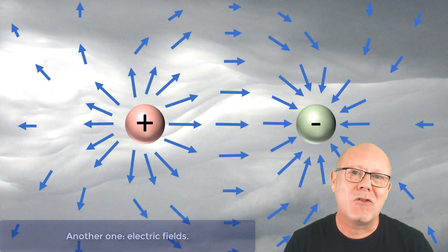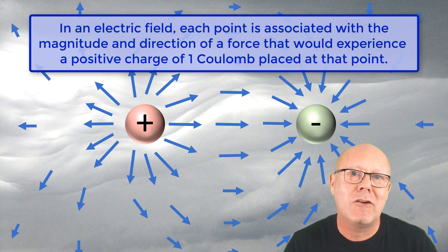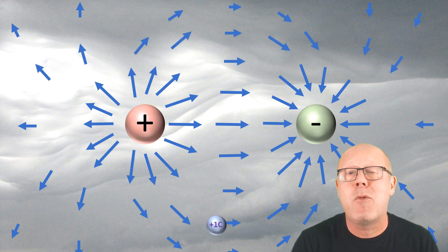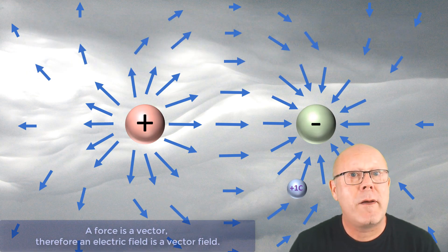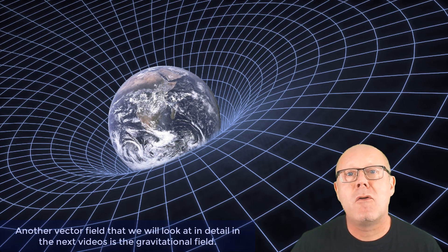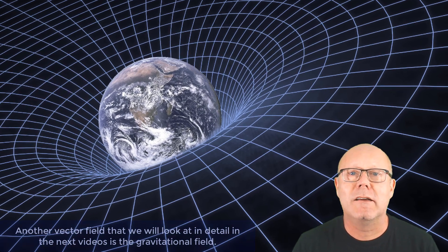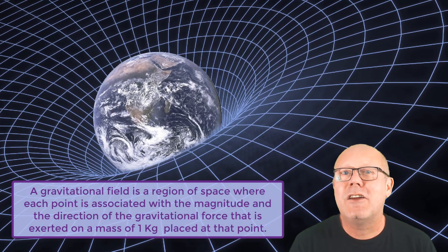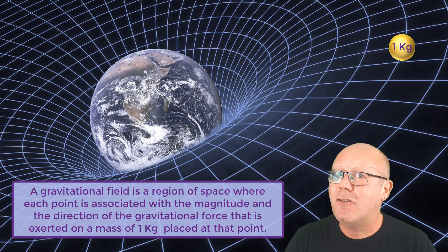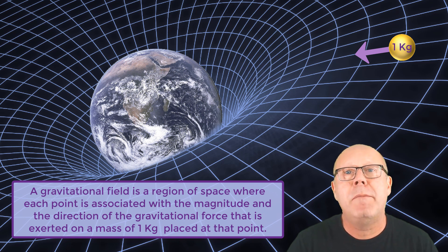Another one: electric fields. In an electric field, each point is associated with the magnitude and the direction of a force that would be experienced by a charge of one Coulomb placed at that point. A force is a vector, therefore an electric field is a vector field. Another vector field that we will look at in detail in the next videos is the gravitational field. A gravitational field is a region of space where each point is associated with the magnitude and the direction of the gravitational force that is exerted on a mass of 1 kg placed at that point.